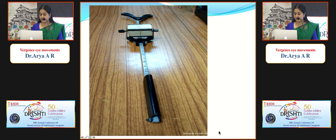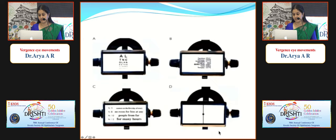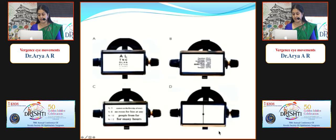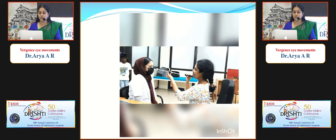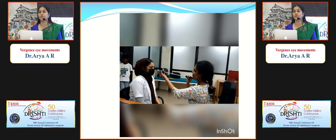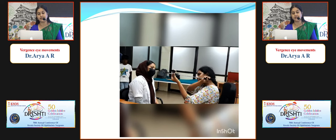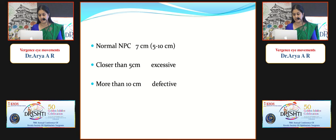Convergence is measured using the RAF ruler — the Royal Air Force ruler — which has four sections: a reduced Snellen chart, a section of the General Post Office telephone directory, a time-storm and time-phase section, and a dot on a line. The NPC is measured using the dot on a line. The ruler is moved toward the patient's eye and the point at which the patient reports double vision is noted. Normal NPC is 7 cm; closer than 5 cm is excessive; more than 10 cm is considered defective.